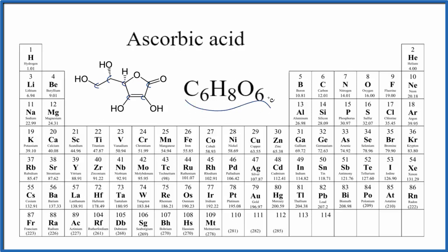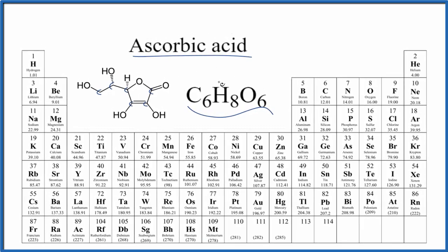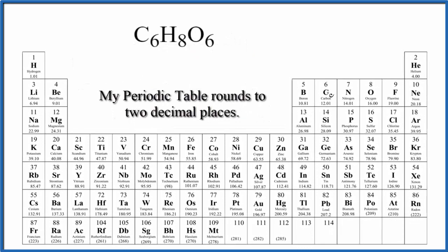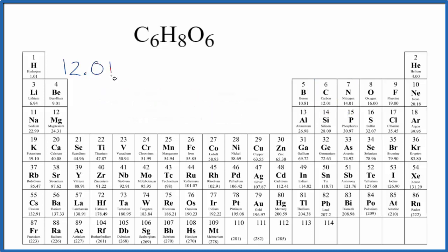So we use this formula here to find the molar mass for ascorbic acid, also called vitamin C. So we go to the periodic table. We find carbon right here, 12.01. And the units are grams per mole. I won't write that each time. We have six carbon atoms, so we multiply that by six.